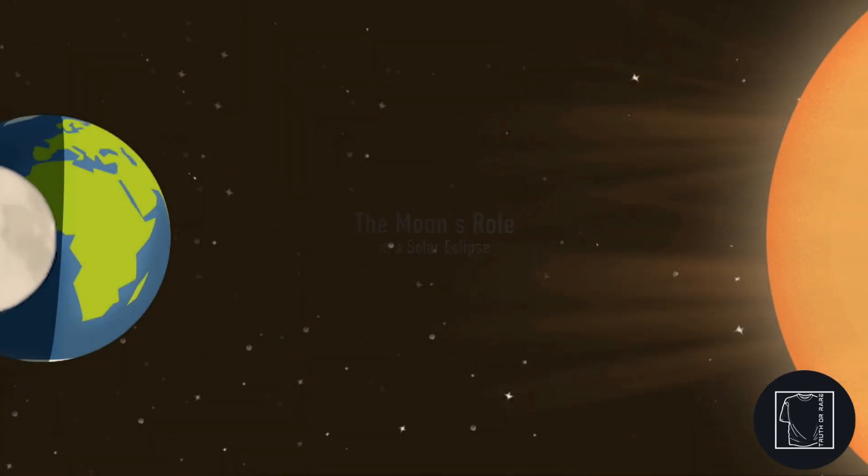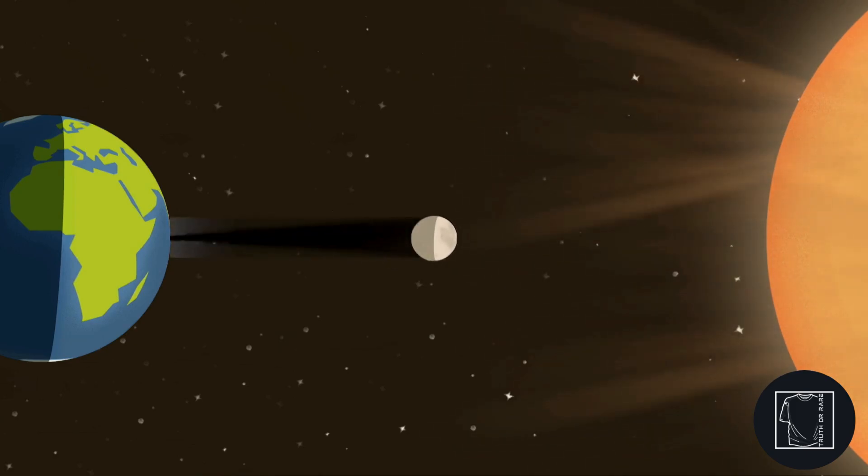A solar eclipse occurs when the moon moves between the Earth and the Sun, blocks the Sun's light, and casts a shadow on the Earth.